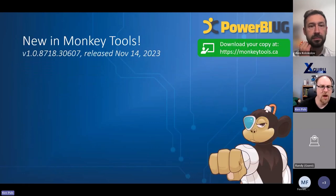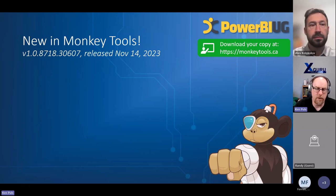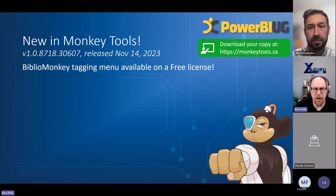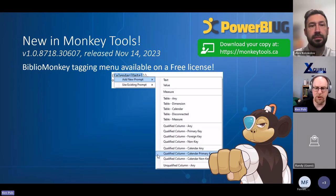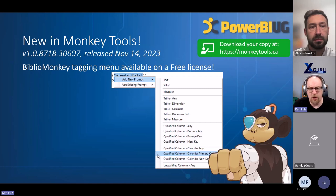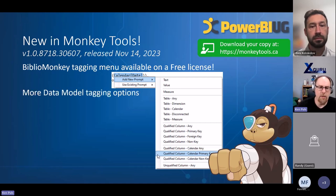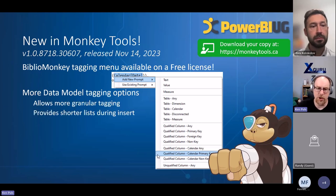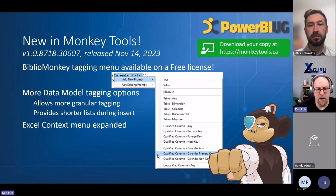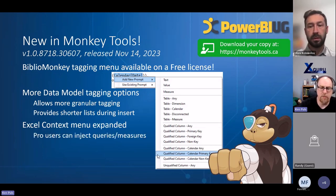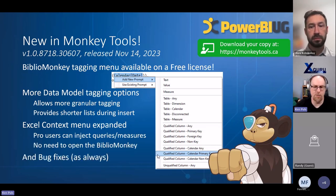A quick note on Monkey Tools: our November 14th release changed up the Biblio tagging menu, now available to everyone on a free license, making it easy to insert dynamic tags into stored items like DAX measures or queries, with contextual help. We also have more data model tagging options, a shorter list for insert, expanded Excel context menu, and pro users can inject queries and measures directly from the Excel grid. Plus the usual bug fixes.